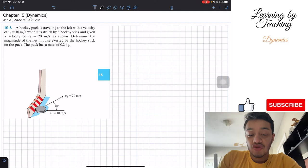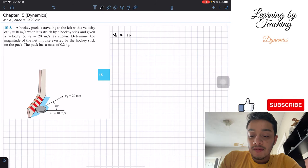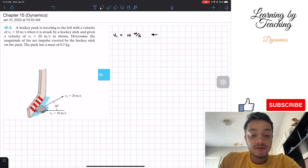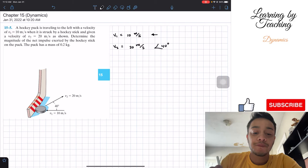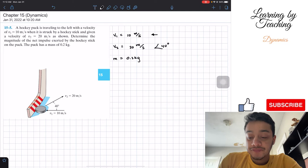The first thing I like to do in these problems is write out my givens. So v1 is equal to 10 meters per second to the left. They are giving us that v2 is equal to 20 meters per second at an angle of 40 degrees. The last thing is that the mass is equal to 0.2 kg.